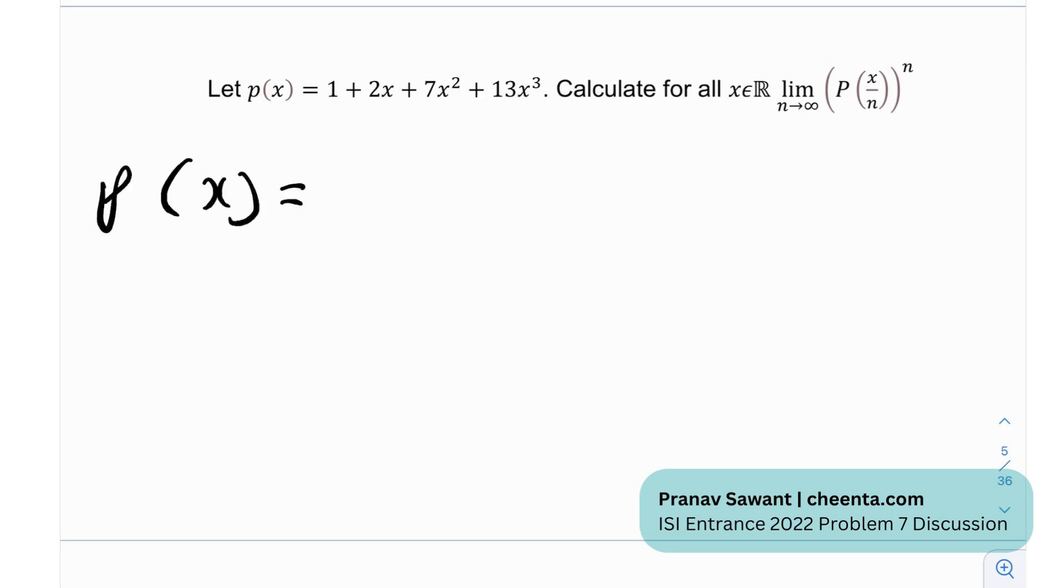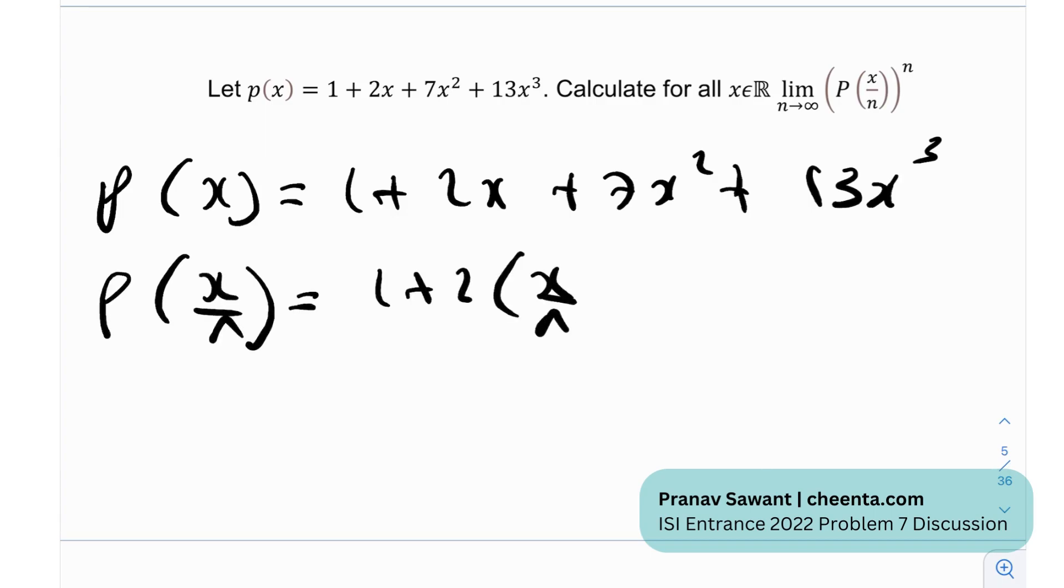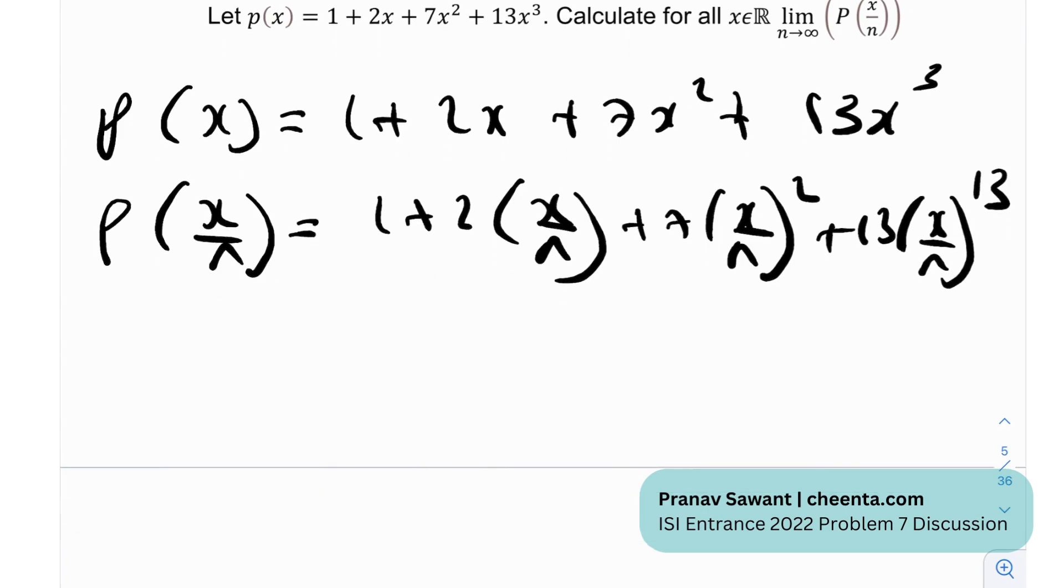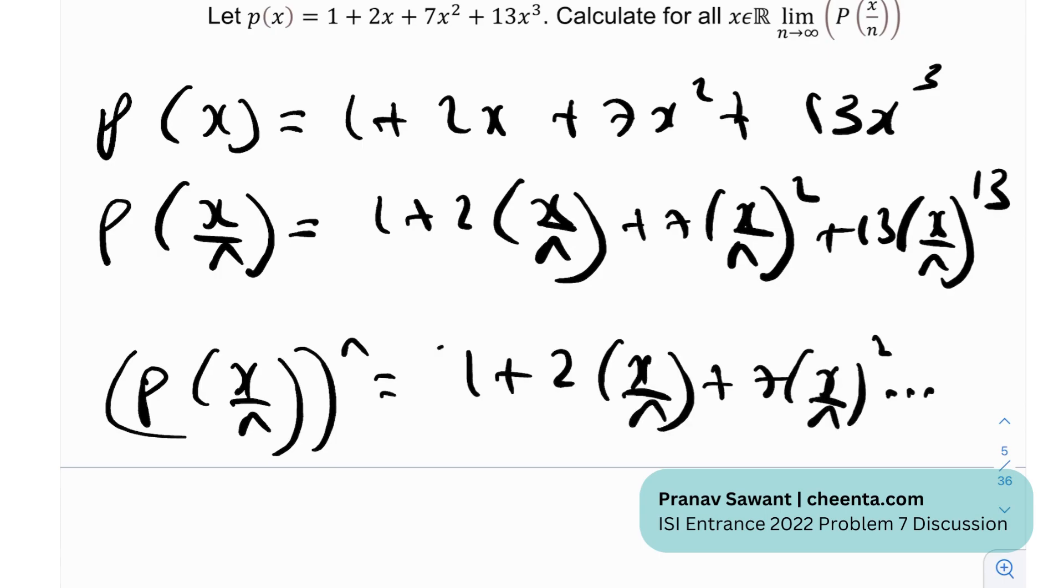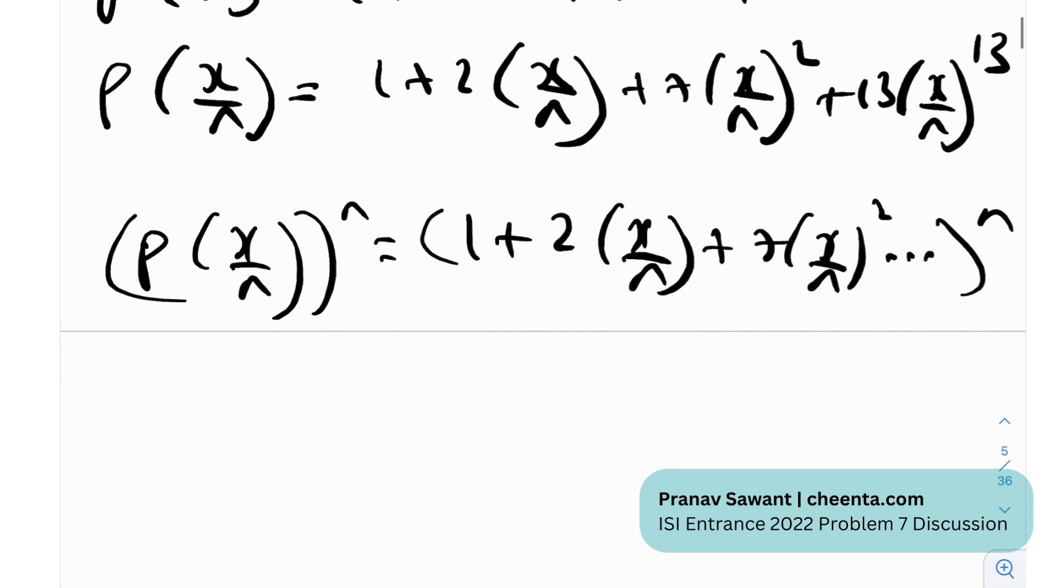Okay, so we have P(x) is 1 plus 2x plus 7x squared plus 13x cubed. That's excellent, because P(x/n) would then be 1 plus 2(x/n) plus 7(x/n)² plus 13(x/n)³, right? And if I just raise this to the nth power, that would be [1 + 2(x/n) + 7(x/n)² + 13(x/n)³]^n. Now if I take this limit as n tends to infinity on both sides, I will actually get 1 to the infinity on the right hand side.